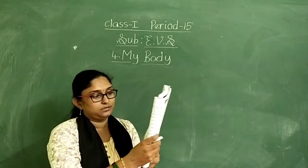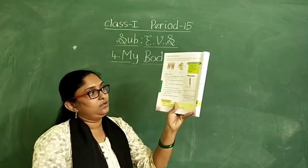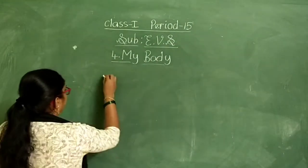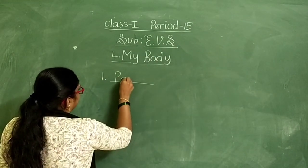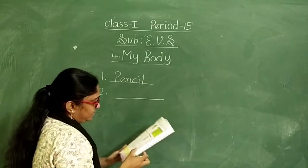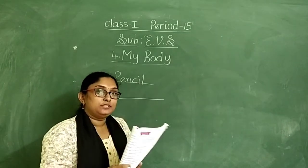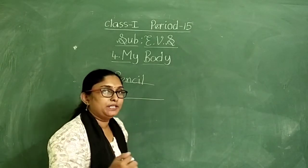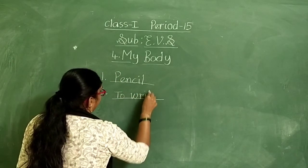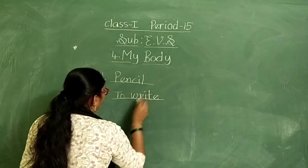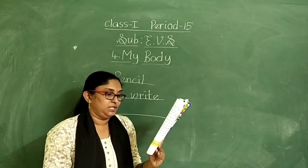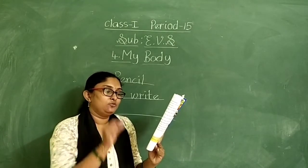Look here — there is a picture. What is the picture? It's a pencil — P-E-N-C-I-L. What do you use this for? To write. You will use pencil to write. Then which part of your body helps you to use it? Which body part will you use to write with a pencil?